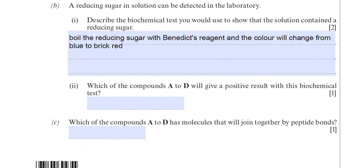Part two asks which of compounds A to D will give a positive result for this biochemical test. It's going to be the glucose molecule, which is compound A — that is the only reducing sugar shown in the question.